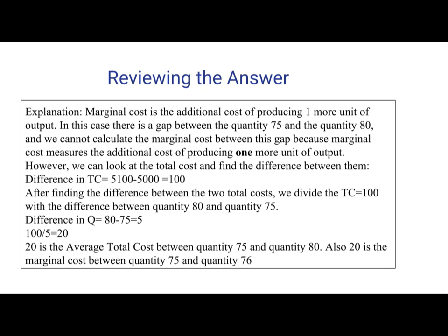After finding the difference between the two total costs, we divide the TC equals 100 with the difference between the quantity 80 and quantity 75. So, the difference in the quantity 80 and 75 is going to be 5. So, we find the total cost and we find the change in total cost and the change in quantity. Therefore, we divide that and we get 20.